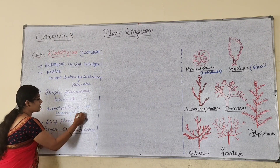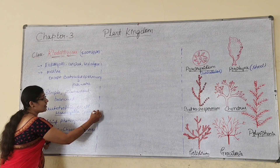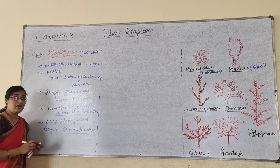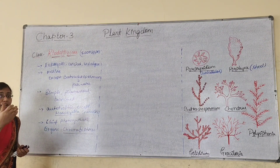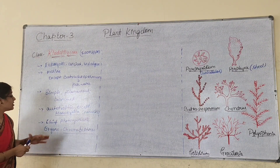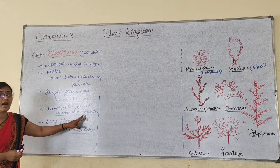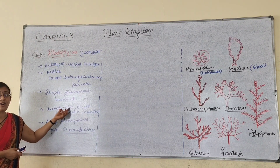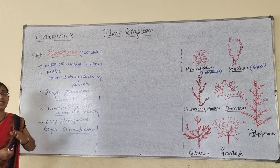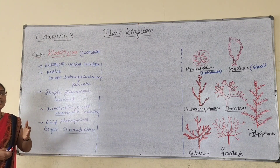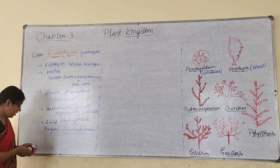Harvena is a parasitic red alga — it grows as a parasite on another red alga. So it is a parasitic alga, whereas others are autotrophic in nature; that is, they have the capacity to prepare their own food.